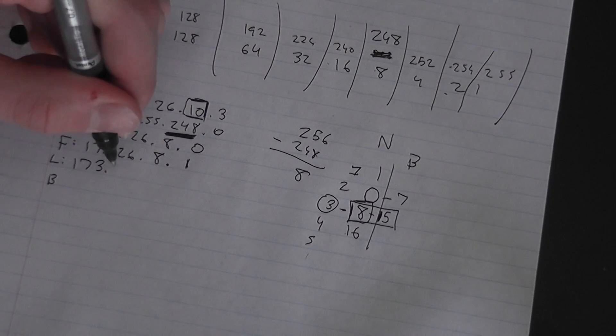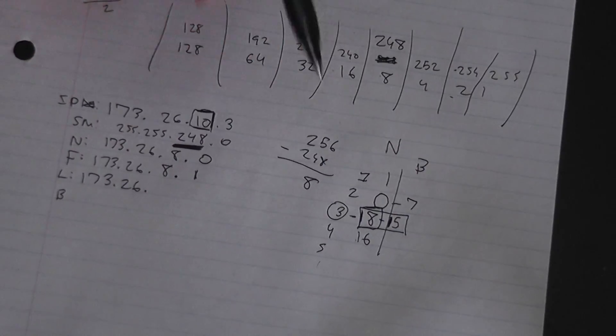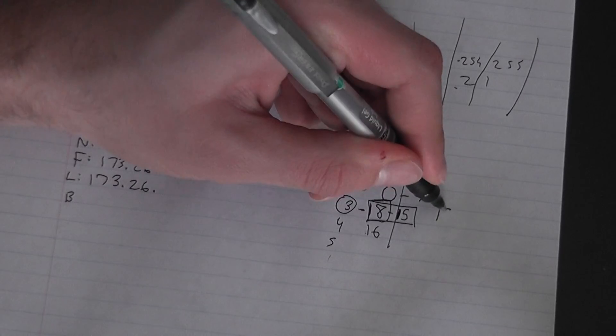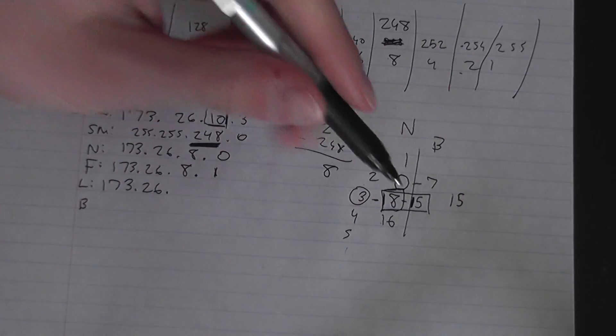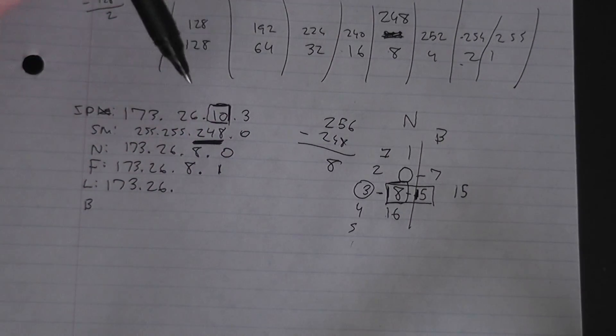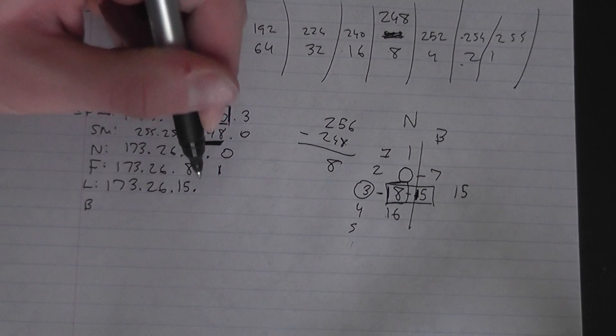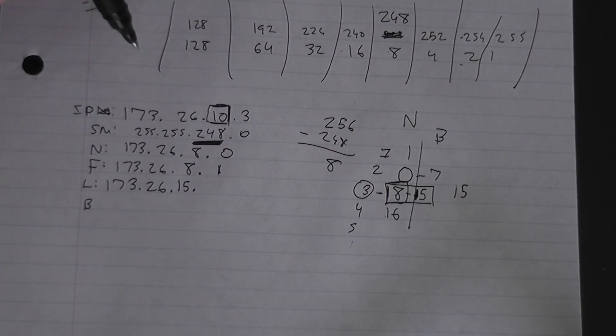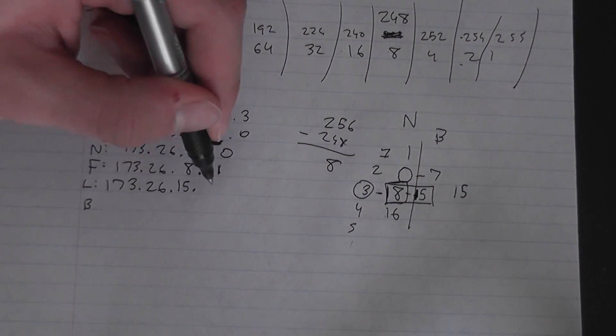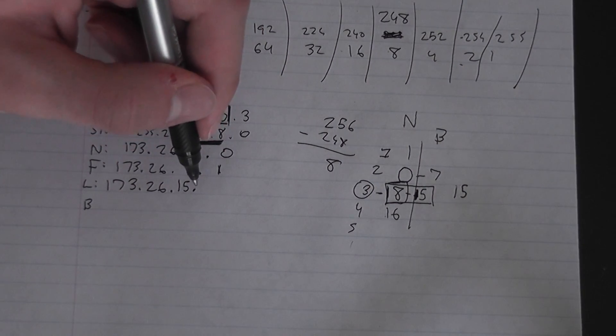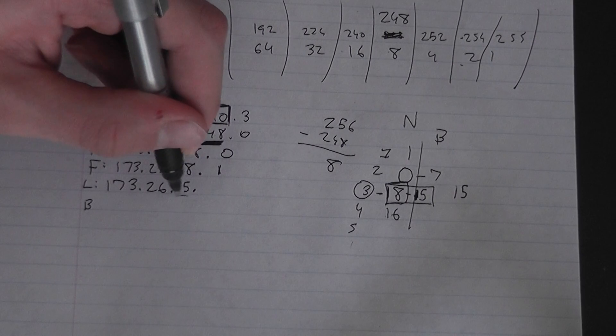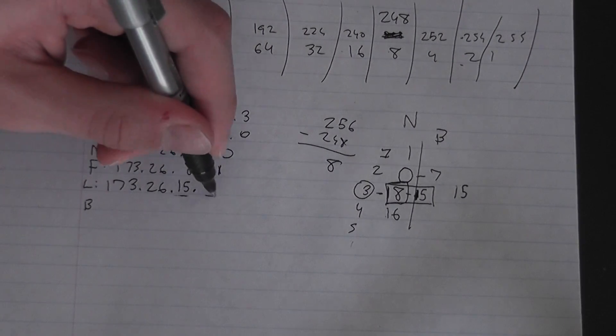Last usable is 173.26.15 - now max value is 255, but remember 255 is broadcast. You can use 255 if it was in the third octet, but on the last one you can't use 255.